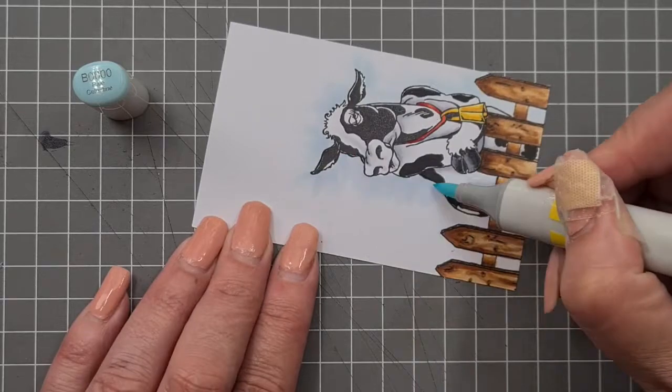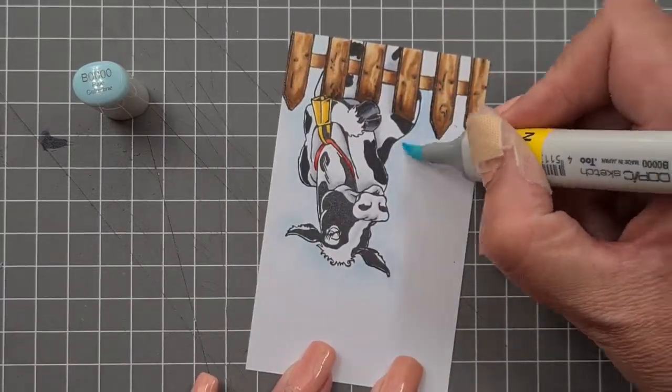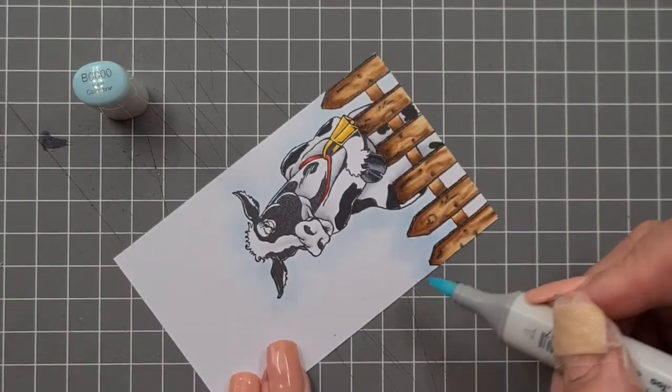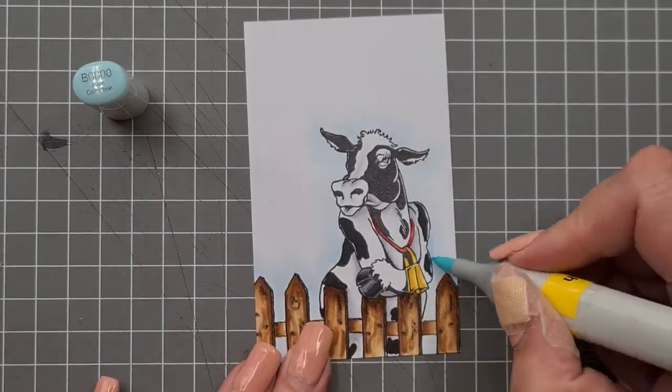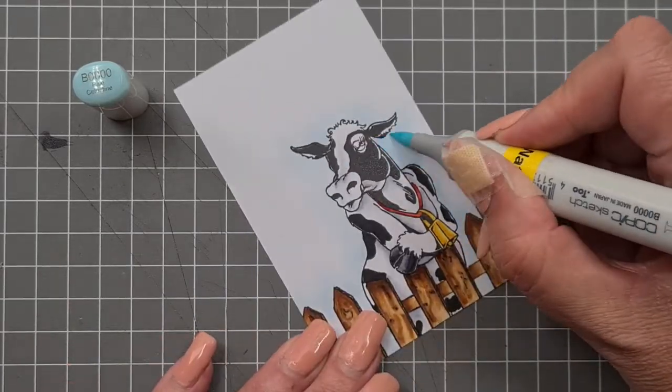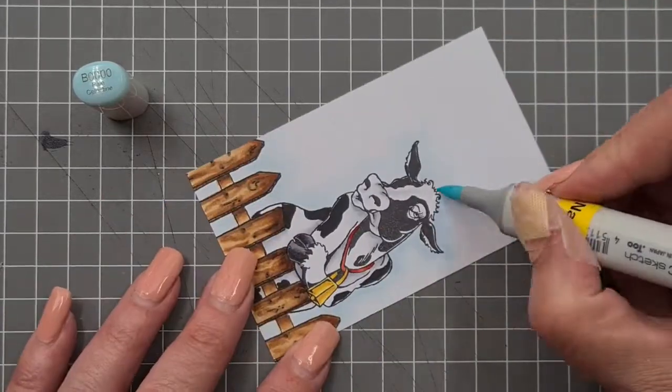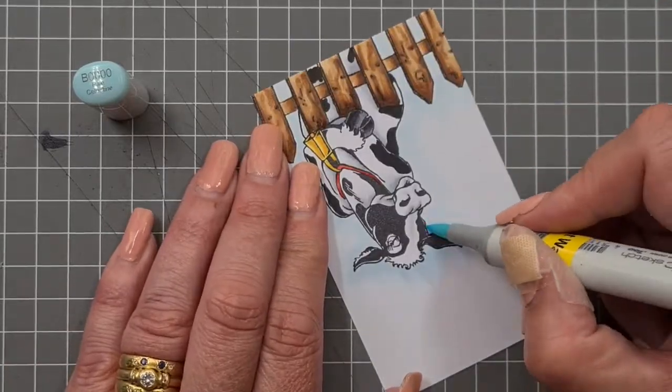I'm going to go over that a couple of times just to get a bit more depth of color but still having it nice and soft because that's just a hint of it.